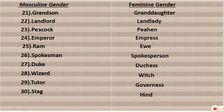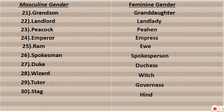Continuing the table: grandson / granddaughter; landlord / landlady; peacock / peahen; emperor / empress; ram / ewe; spokesman / spokeswoman; duke / duchess; wizard / witch; tutor / governess; stag / hind.